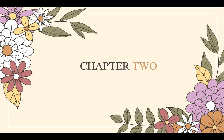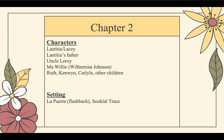Moving on to chapter two. Characters: Letitia — it is here that we learn that her nickname is Lacey. We have Letitia's father, Uncle Leroy, and Ma Willy, and we also learn here that her full name is Wilhelmina Johnson. We have Ruth, Kenwin, Carlisle, and some other children. The setting begins in La Puerta, which is a flashback, and then it moves to Suklal Trace.